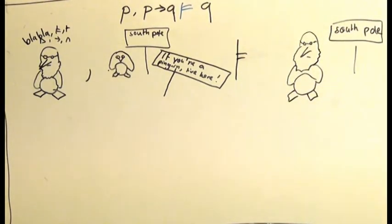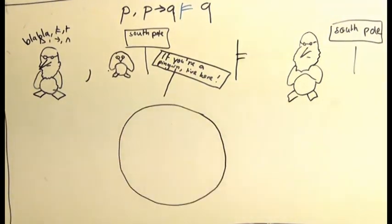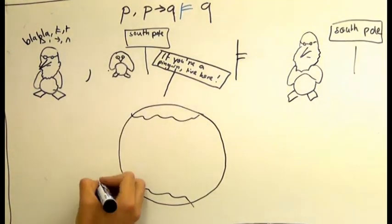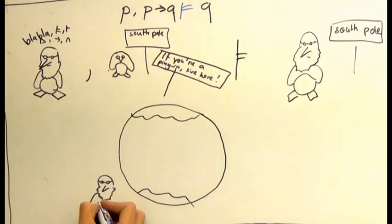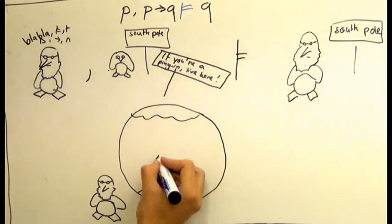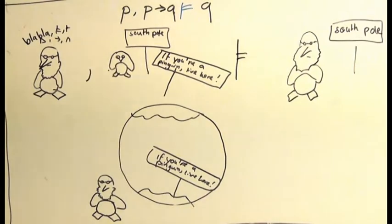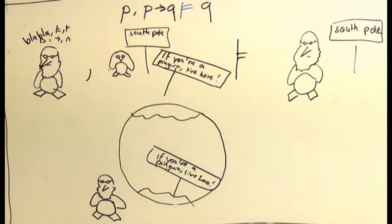We can interpret this statement as follows. If we try to draw a world where both our premises are true, then in this world it necessarily follows that a conclusion is true. In other words, we cannot draw a world where your teacher is a penguin, penguins live on the south pole, but your teacher does not.